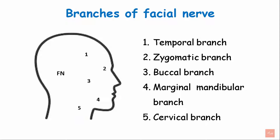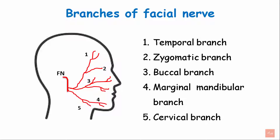Branches of the facial nerve emerging from the stylomastoid foramen: the first branch is the temporal branch, the second is the zygomatic branch, third is the buccal branch, fourth is the marginal mandibular branch, and fifth is the cervical branch.